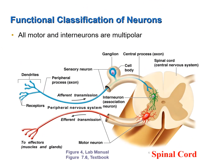Where have we seen multipolar neurons? Our motor neuron and our interneurons are multipolar neurons. Notice the multiple processes that they have.